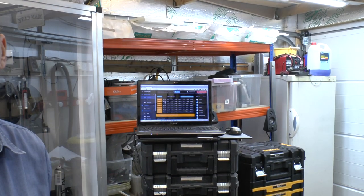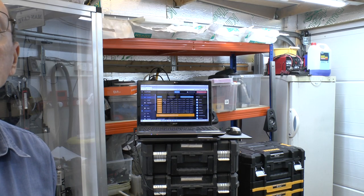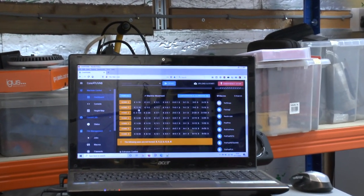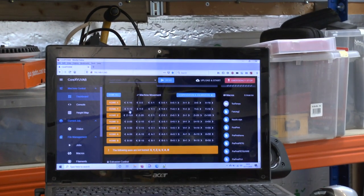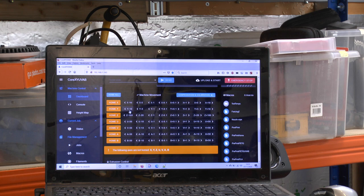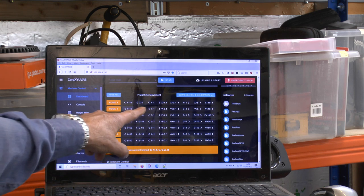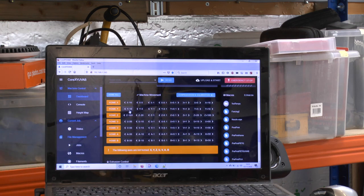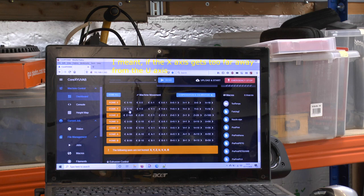This is a laptop that I use which is just perched on the top of some toolboxes. As you can see, I've got buttons to move each individual axis, but I have to be really careful because if the X axis gets too far away from the Y axis, it's going to pull the Bowden tubes out.